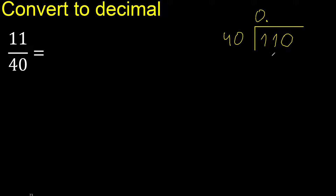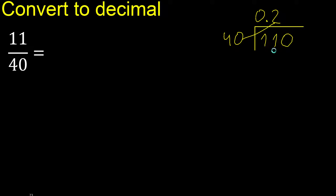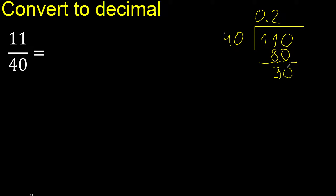Here 0 point — 40, multiply by which number is nearest to 110 but not greater. Multiply by 3 is 120, which is greater. Multiply by 2 is 80, which is not greater. Subtract — remainder is 30.